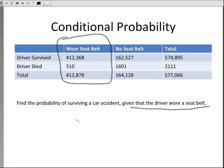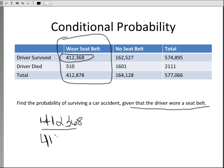Given this, what's the probability of surviving an accident? We have 412,878 people who wore a seat belt. When these people got into an accident, 412,368 survived. So the probability would be 412,368 divided by 412,878, and when we divide that out, we get a probability of .998.